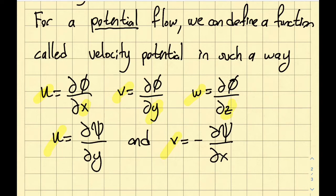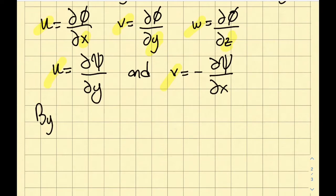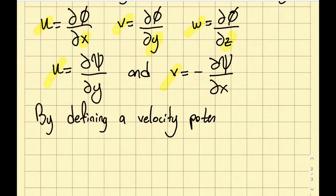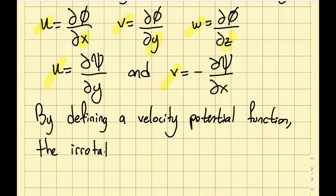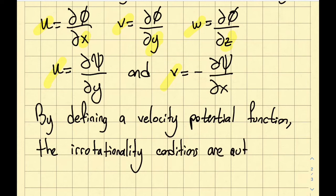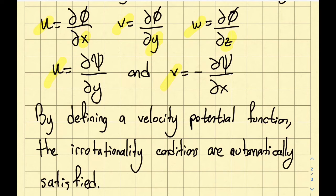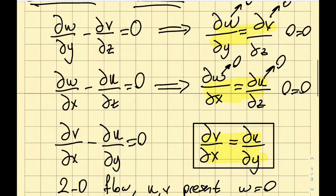By defining a velocity potential function, the irrotationality conditions are automatically satisfied. If someone gives me the velocity potential function, it means it exists, and the irrotationality conditions — those three highlighted equations — are automatically met.